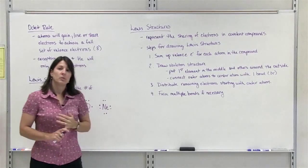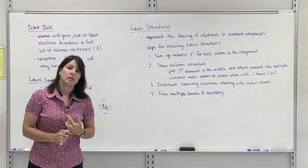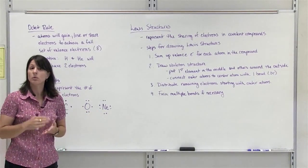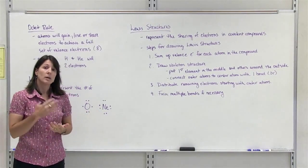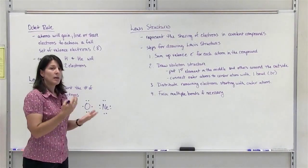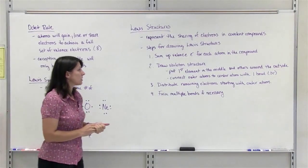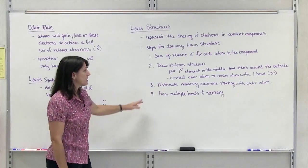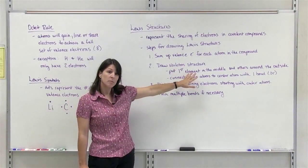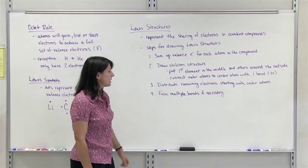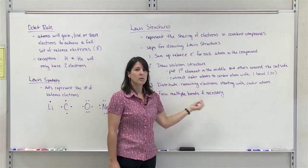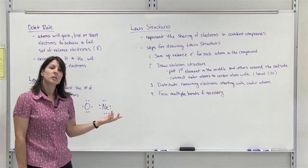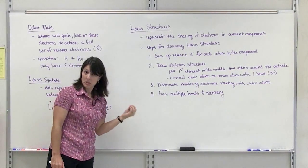The first step is to sum up your valence electrons for all of the atoms in the compound. You're going to go to the periodic table, see what group number each element is in, and add up all the valence electrons. The second step is to draw the skeleton structure, which consists of putting the first atom in the chemical formula in the center and the other atoms around the outside. There is an exception: hydrogen can never be in the center.